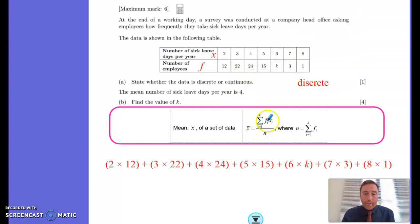Let's do the top part of this fraction here. So let's do each frequency times the values, 2 times 12, 3 times 22, and I get this 6 times k in there. Now the bottom part of this, the sum of all the frequencies, 12, 22, 24, 15. Add all those together like that.